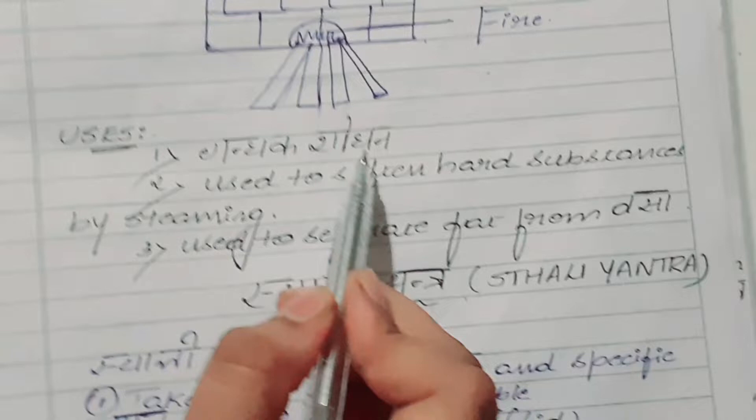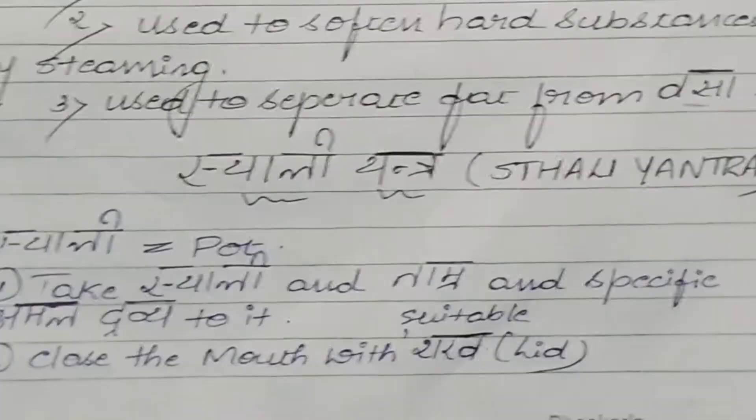Uses of Swedani Yantra: Gandhaka shodhana - it is used for shodhana of the Gandhaka. Also, it is used to soften hard substances by steaming and to separate fat from the vasa.